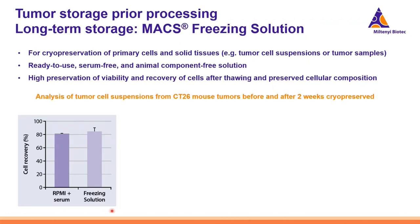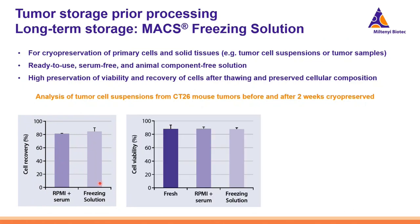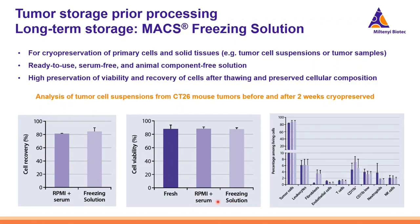We can see an example of CT26 mouse tumors that had been processed and the tumor cell suspensions were cryopreserved for around two weeks. We compared the performance of the serum-free solution versus another solution containing serum. The performance was equally good or even better in terms of recovery of viable cells after thawing. The viability was also nicely preserved compared to the fresh sample, and the composition of the cell suspension was nicely preserved when looking at the different populations of the tumor cell suspension.